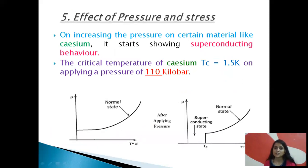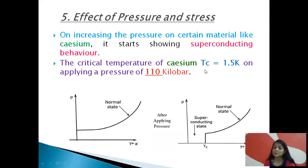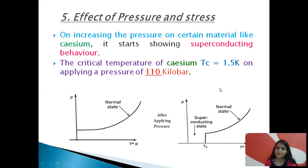Now let's see how pressure and stress affect the superconducting property. At ordinary pressure, a material may not show superconducting behavior. But when we increase the pressure on a certain material like cesium, it starts showing superconducting behavior. The critical temperature of cesium is 1.5 Kelvin. When we apply a pressure of about 110 kilobar, cesium behaves like a superconductor.